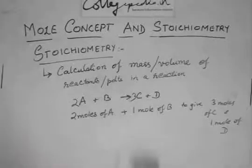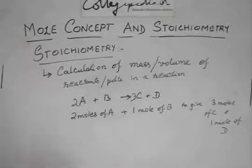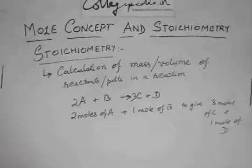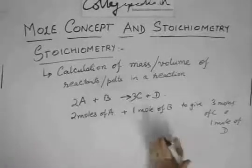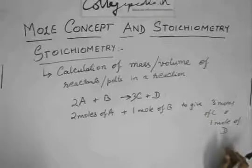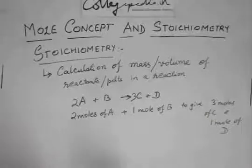If we know how many moles of any one is going to be used, then we can find out the weights or the number of moles or the volumes if they are gases of all the other reactants or products because the ratio would be constant. In this, if you have 4 moles of A, they will react with 2 moles of B to give 6 moles of C and 2 moles of D. And we now have learned to convert this mole thing into its weight.